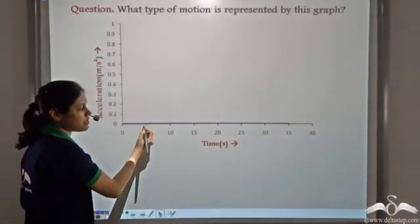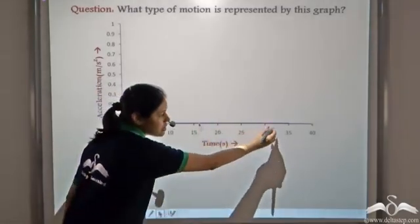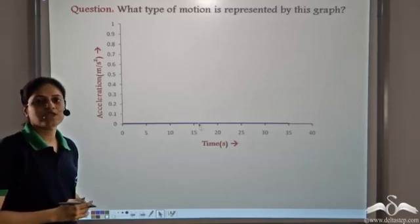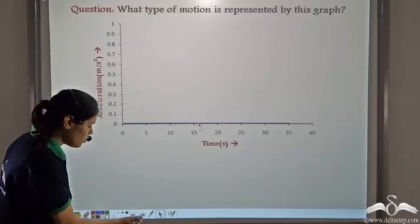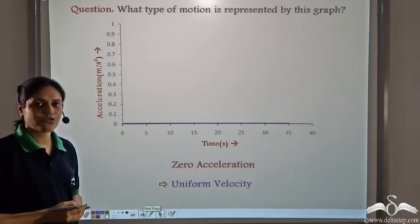So at all points in time, acceleration is zero. That means the velocity is not changing. So this graph represents uniform velocity or uniform motion.